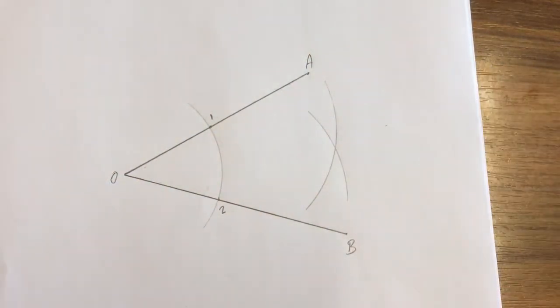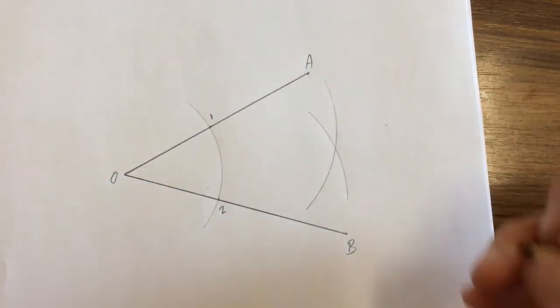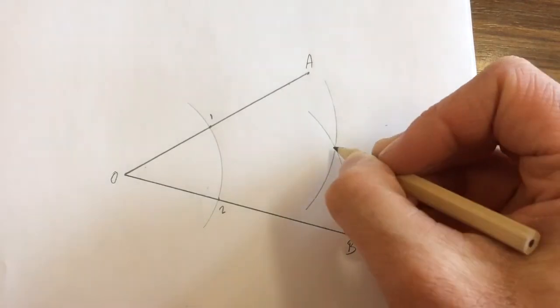As you'll notice, there's a location which I would call location number three, which is where the two curves cut each other.